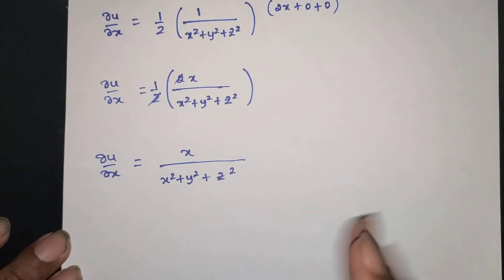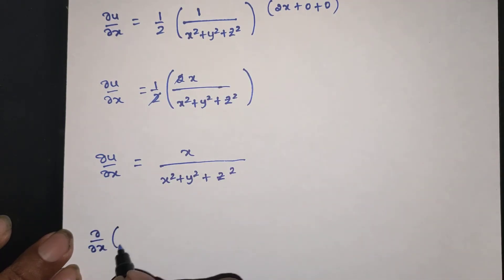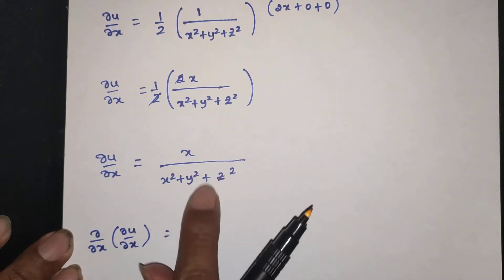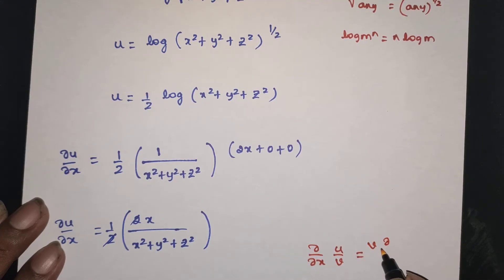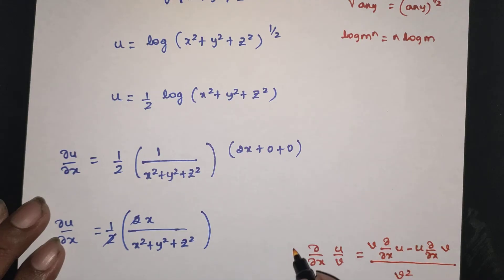Now differentiating again with respect to x to get ∂²u/∂x². We apply the quotient rule d/dx(u/v) = (v · du/dx − u · dv/dx) divided by v squared.